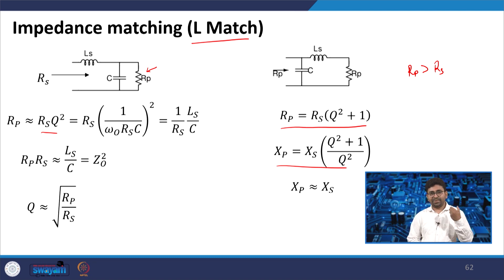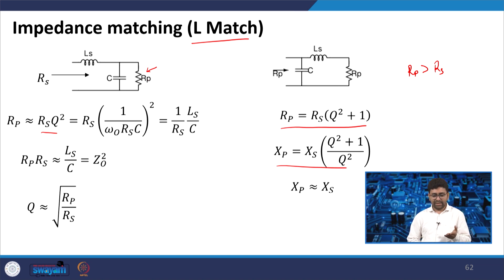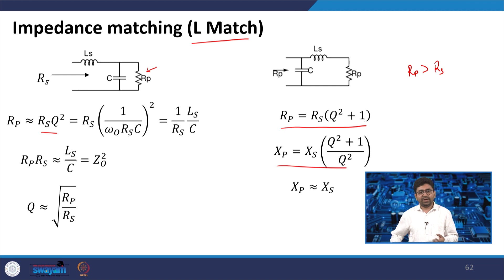You can also apply the quality factor current analogy: during resonance, the current through Ls or C is Q times the source circuit current. As your current increases your resistance reduces — Rs is reduced. This is the intuitive way of understanding impedance matching based on Q.